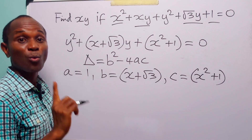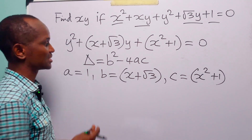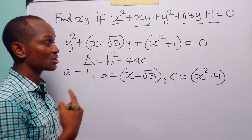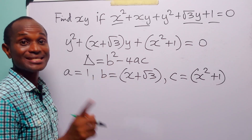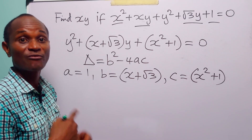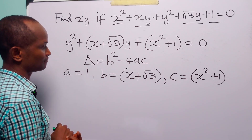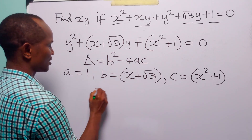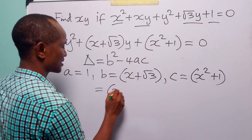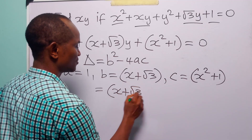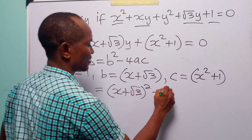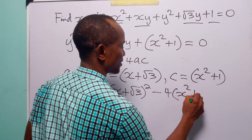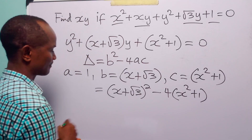Remember that for a quadratic equation to have real roots, the discriminant must be equal to 0 or positive, because if it is negative then the quadratic equation will have complex roots. So let us find the discriminant: we have b squared, that is x plus root 3 squared, minus 4 times 1 times x squared plus 1.